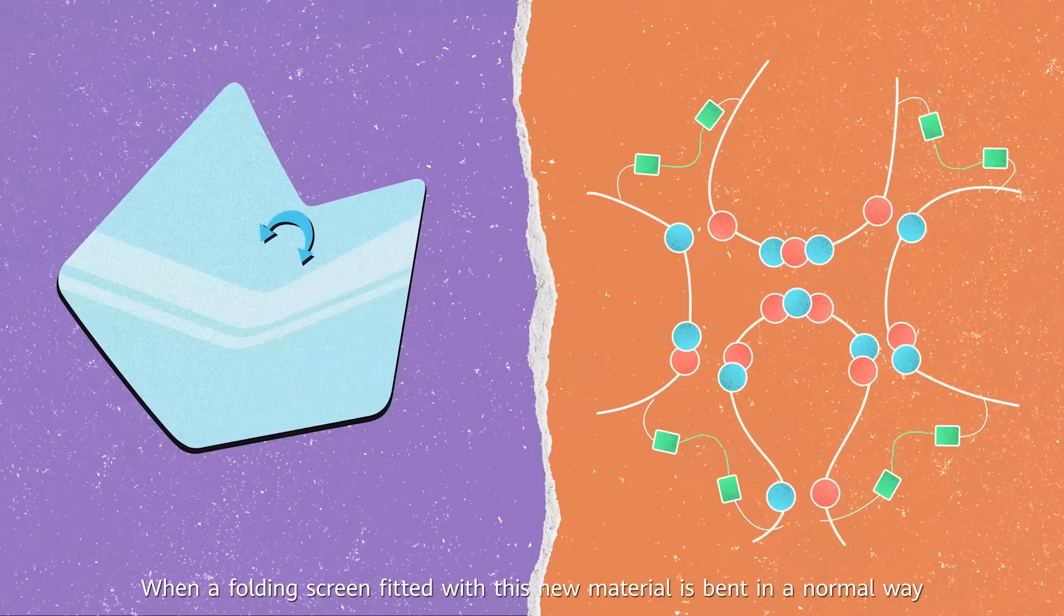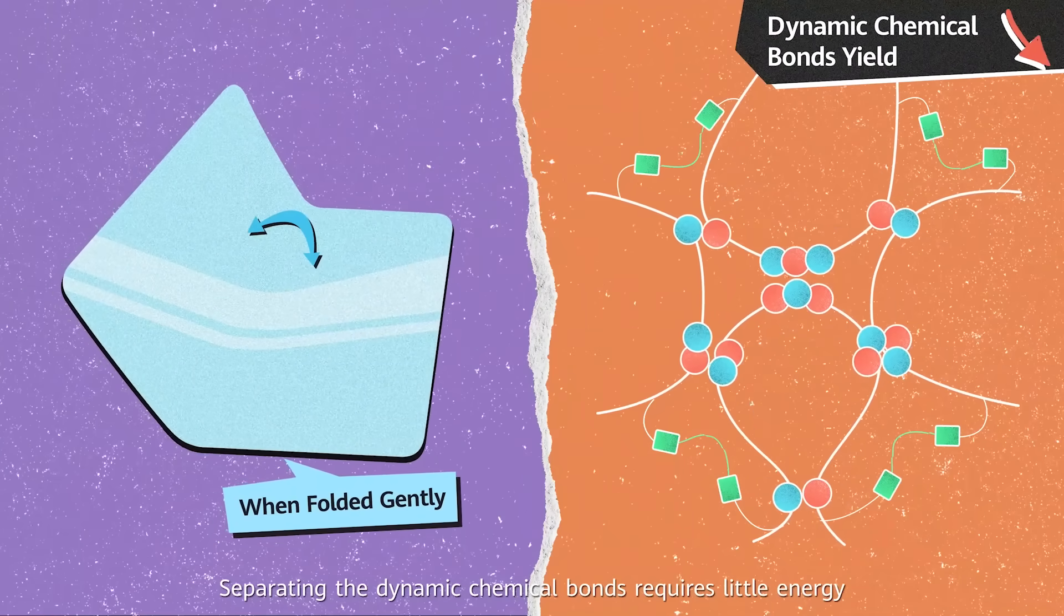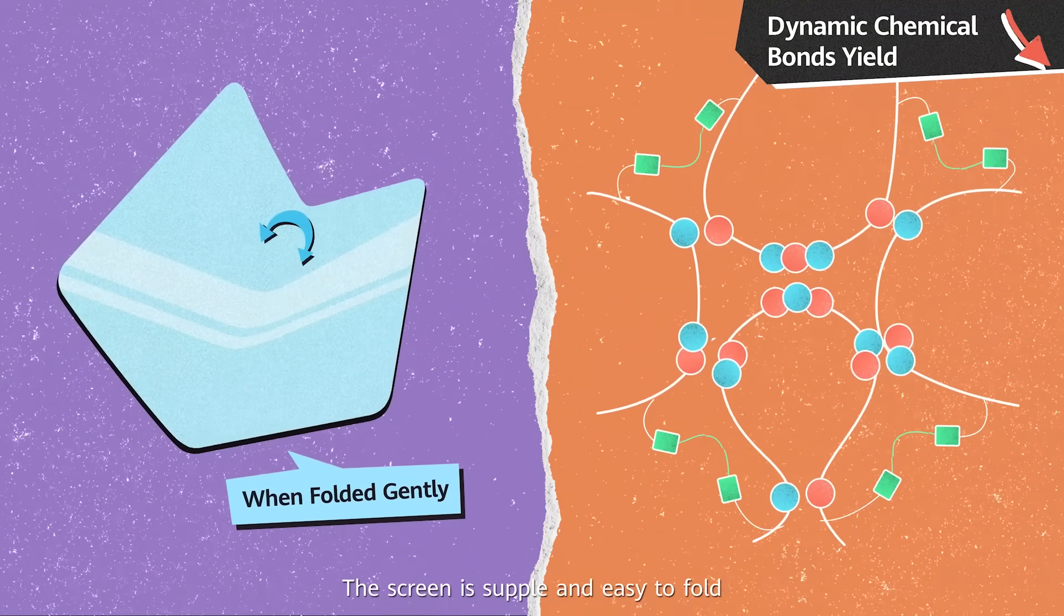When a folding screen fitted with this new material is bent in a normal way, separating the dynamic chemical bonds requires little energy. The screen is supple and easy to fold.